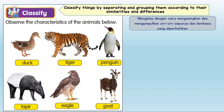Let's refer to the example from the textbook page 5. To classify, firstly we need to observe the characteristics of the animals below. The characteristics may be similar or different.